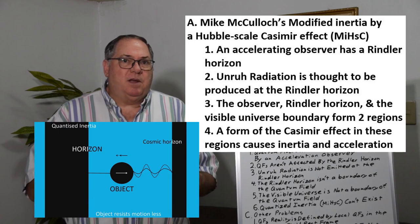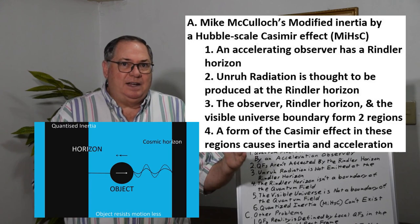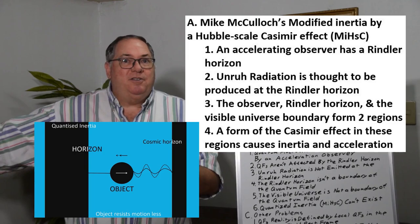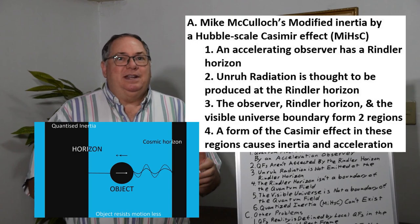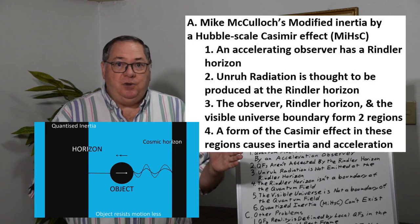What Mike McCulloch considered is that if you have an observer here, you have a Rindler horizon maybe 100 light years away, and then you may have the boundary of the universe way out here at 13 billion light years.